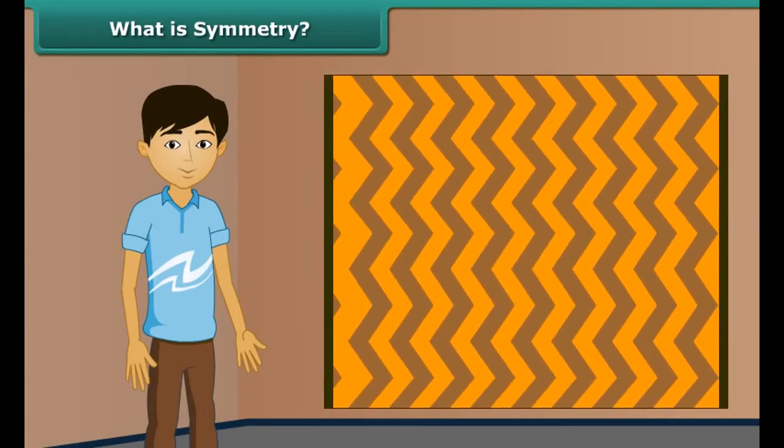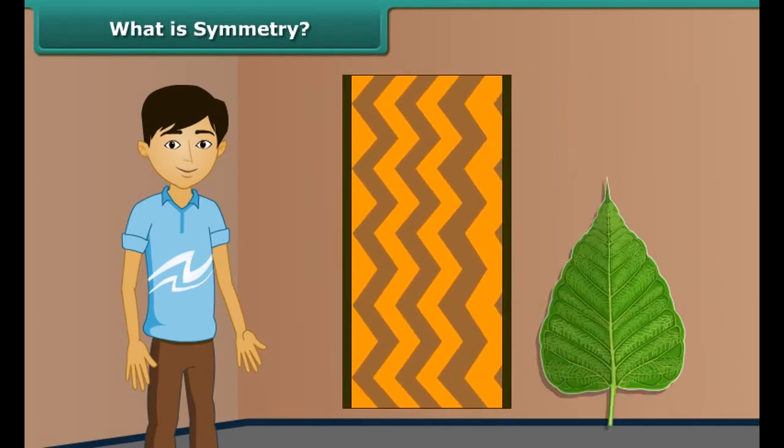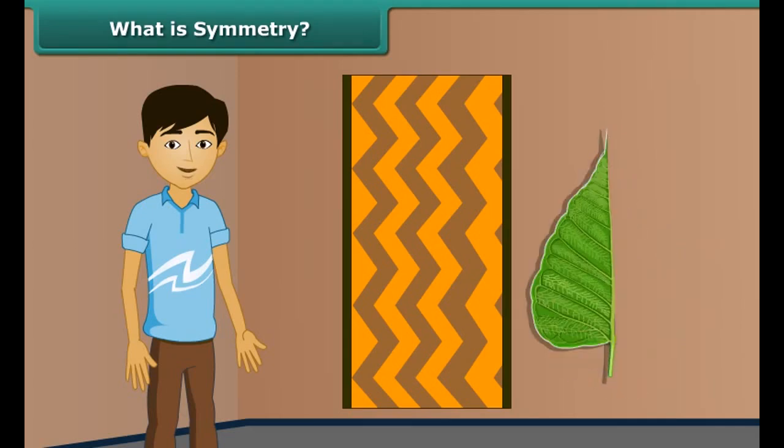Children, look at the rug. When you fold it, the left and right halves match each other. Thus, the rug is said to be symmetrical. Look at this leaf. On folding the leaf, its two halves match each other. Thus, it is symmetrical.